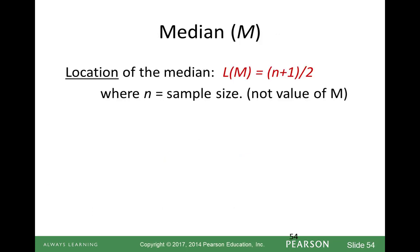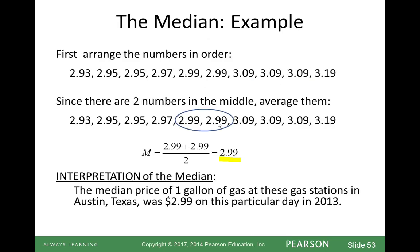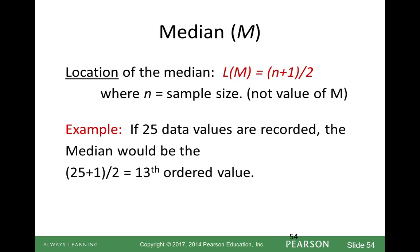When we talk about the median, there's a formula for the location of the median. Capital M is used for median, and L stands for location of the median. We add how many data points there are, add 1, and divide by 2. For 10 values: 10 plus 1 is 11, divided by 2 is 5.5, so the median is halfway between the 5th from the bottom and 5th from the top. For 25 values: 25 plus 1 is 26, divided by 2 is 13, so the 13th value is the median.